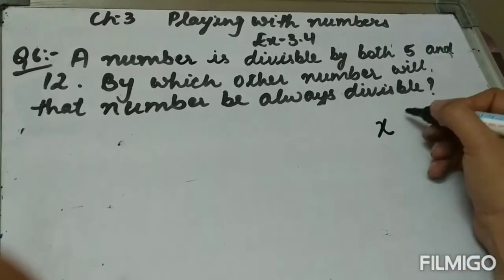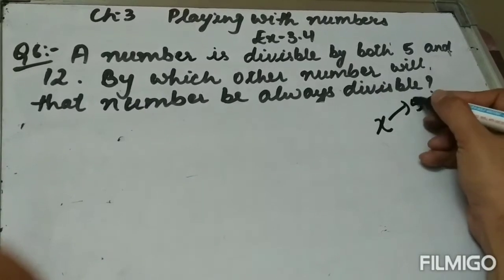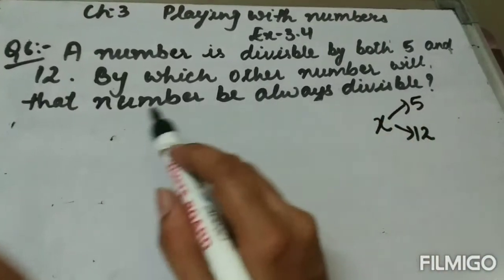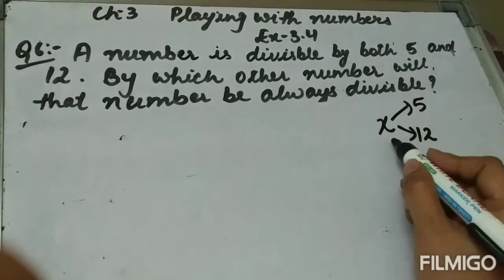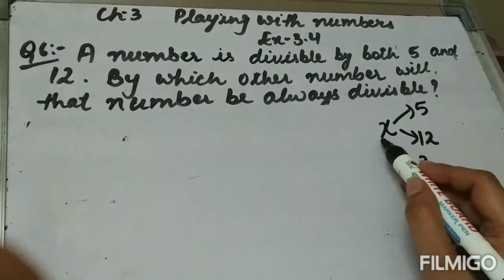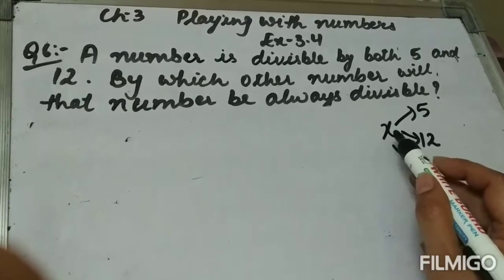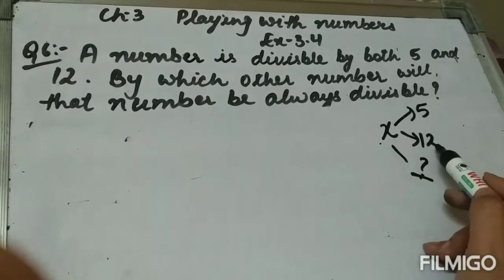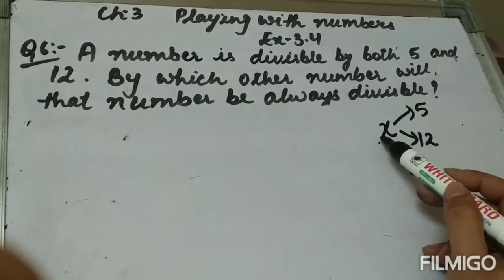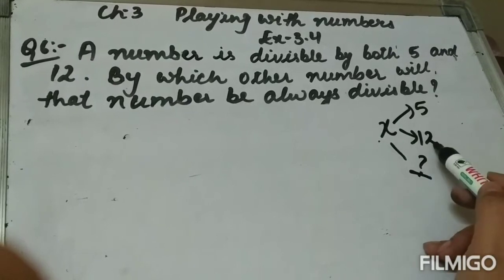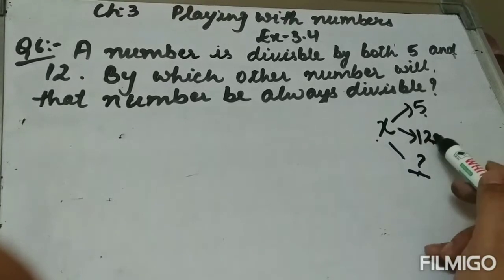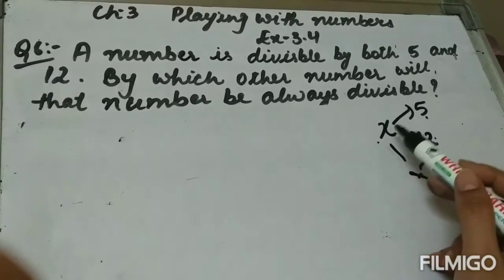We have to find by which other number this number is also divisible. This number is divisible by 5 and 12, which means 5 and 12 are factors of this number. This number is a multiple of these two numbers.